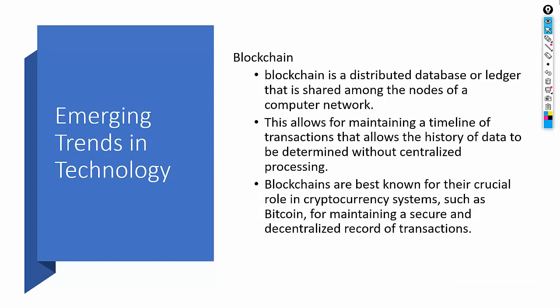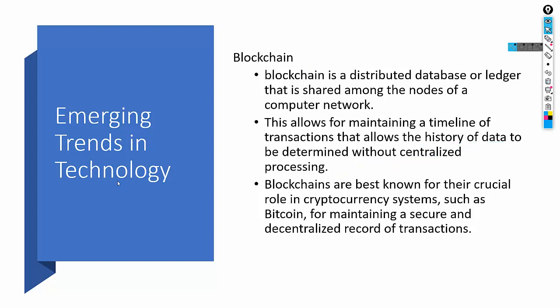There are risks associated with emerging technologies such as blockchain. Blockchain is a distributed ledger shared among nodes of a computer network. It is used in finance, manufacturing, and other verticals. It allows maintaining a timeline of transactions and history of data without centralized processing — but that is also a risk, because there is no central party to manage things, which brings lack of uniformity. Modifying or updating a transaction leads to integrity issues. Blockchain is best known for its role in cryptocurrency systems like Bitcoin. Since it is decentralized, it brings new risks to the organization. We need to analyze all risks before implementing emerging technologies in the enterprise.